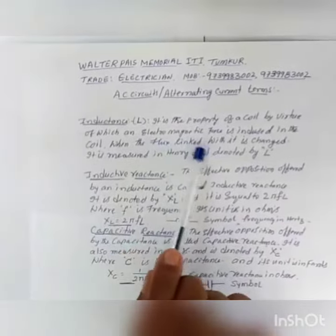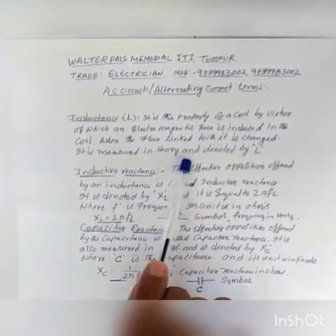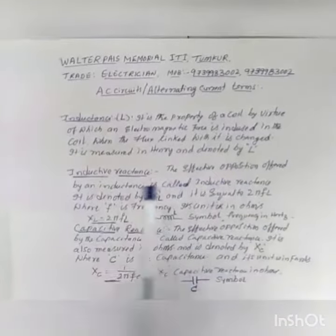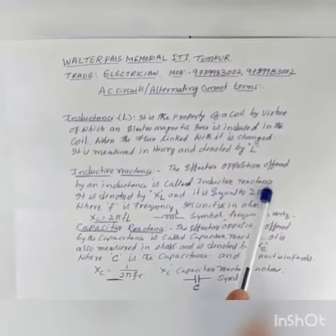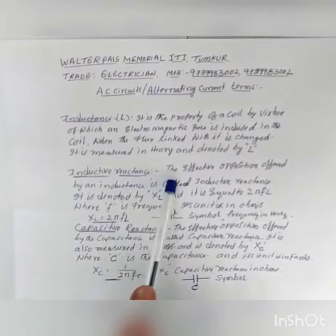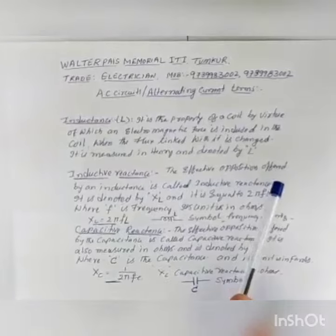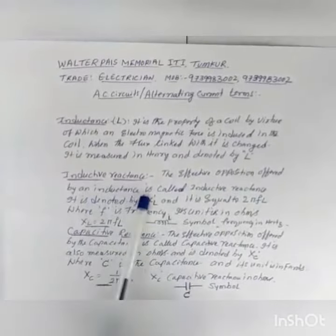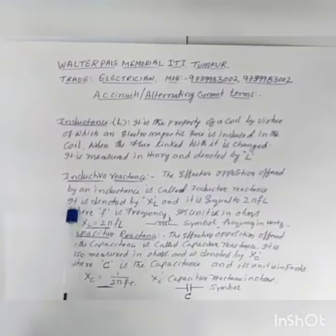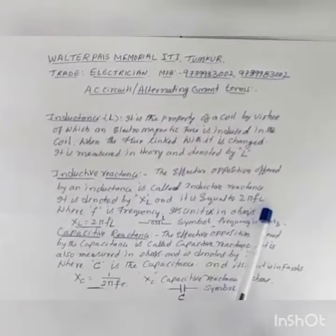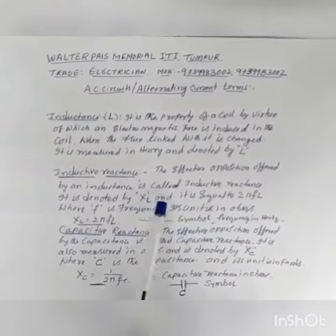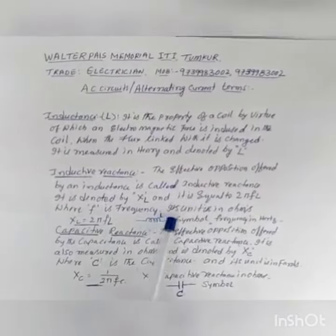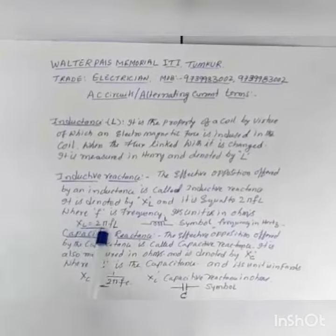Inductance is called inductive reactance. The opposition offered by an inductance in a current circuit is called inductive reactance. It is denoted as XL and it is equal to 2πFL. Inductive reactance increases when L is also increased, because it is directly proportional. Where F is the frequency, its unit is in Ohm. Therefore, XL is equal to 2πFL.